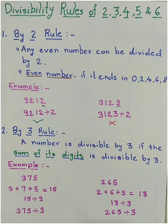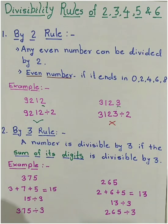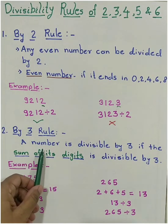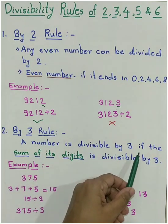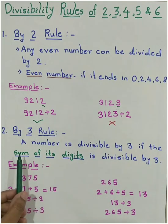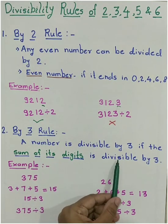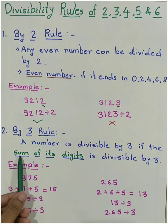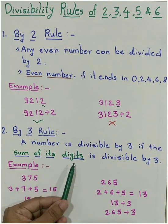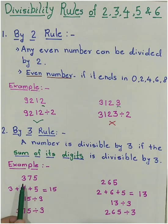Now let's see the next rule, by 3 rule. So what this rule says? A number is divisible by 3 if the sum of its digit is divisible by 3. So what is this sum of its digit? Let's see this with an example.